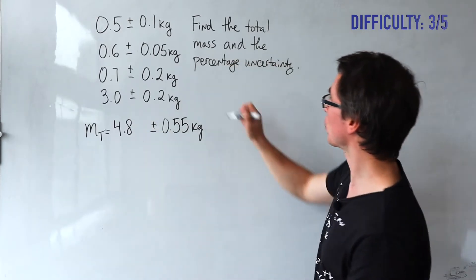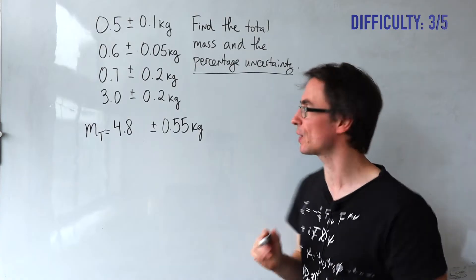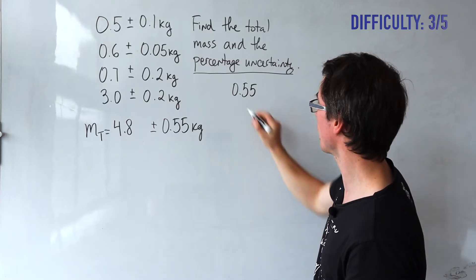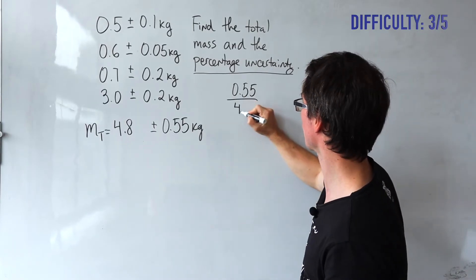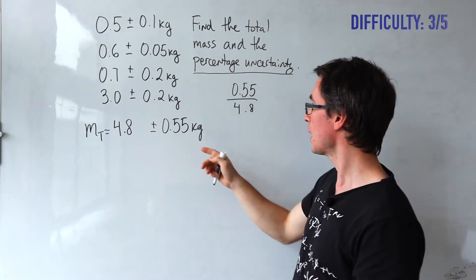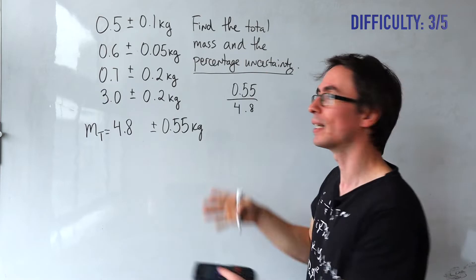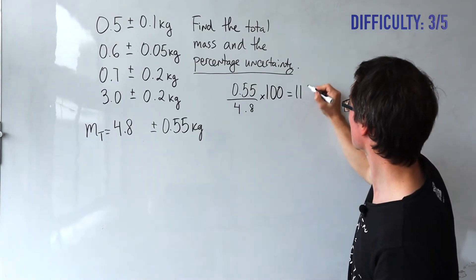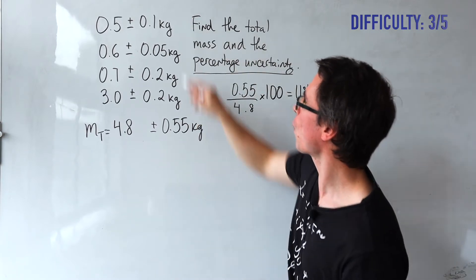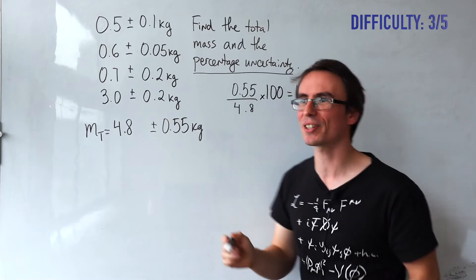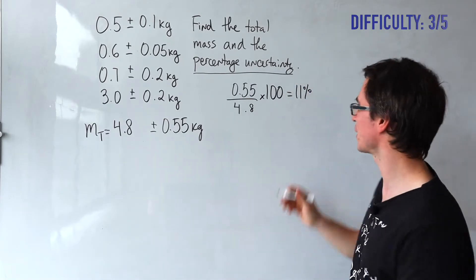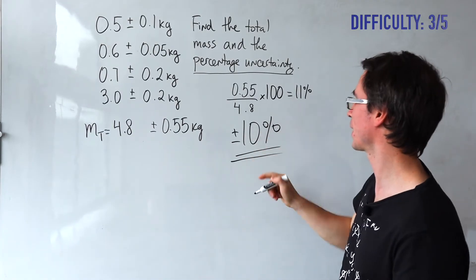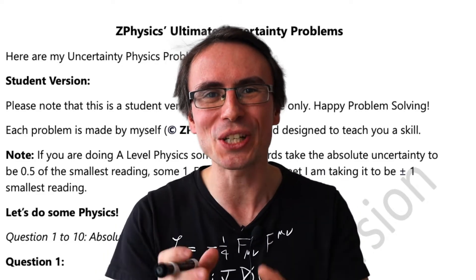We're not done yet, because the question is asking about the percentage uncertainty. So we take the absolute uncertainty, 0.55, divide by the value, 4.8 — a good rule of thumb is right over left times 100. This gives around 11%. Since pretty much all uncertainties are given to one significant figure, I'm going to give the final answer as plus or minus 10%.